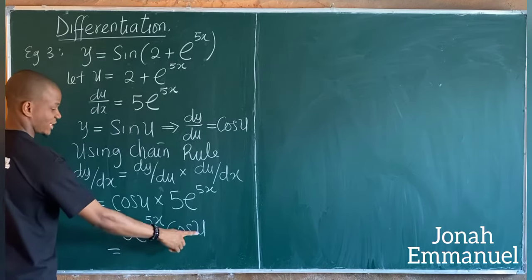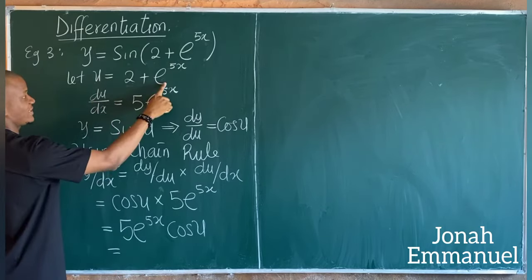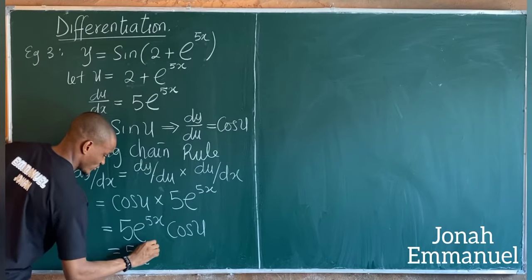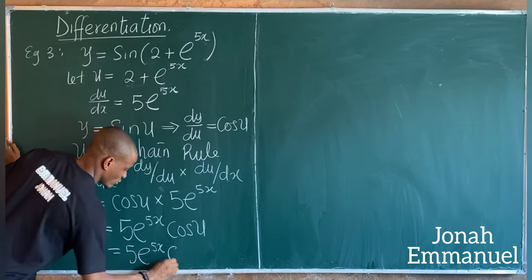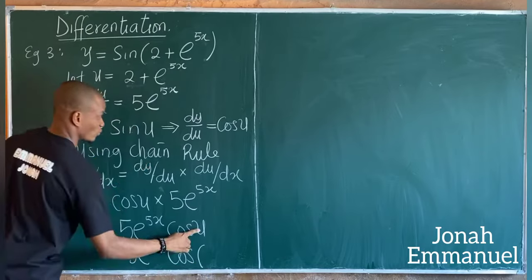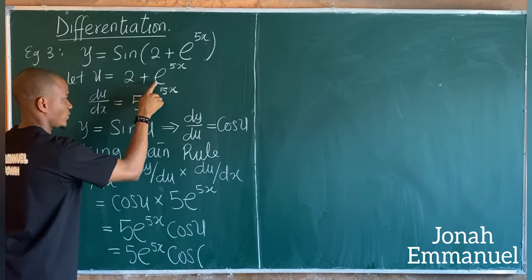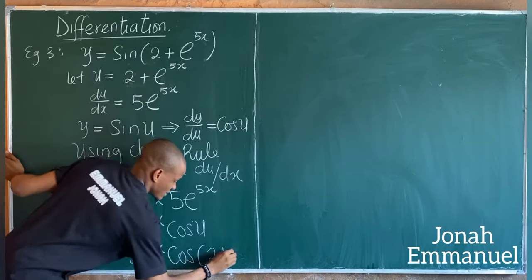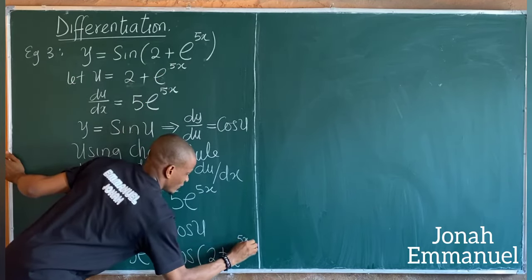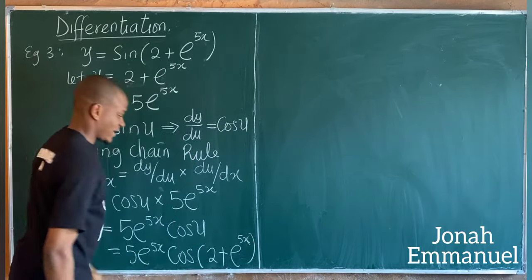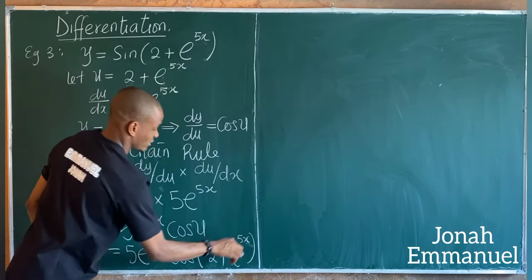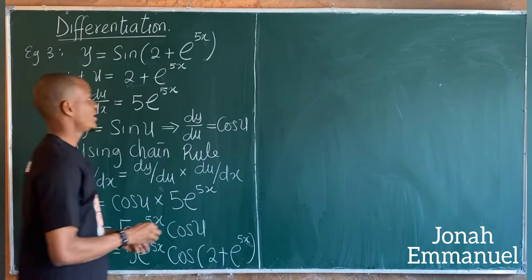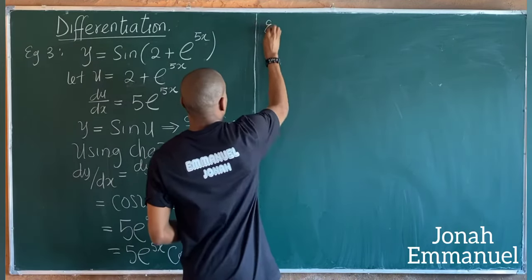Multiplying these together gives 5e^(5x) × cos(u). Substituting back u = 2 + e^(5x), the final answer is: dy/dx = 5e^(5x) × cos(2 + e^(5x)). This is my answer after differentiation.